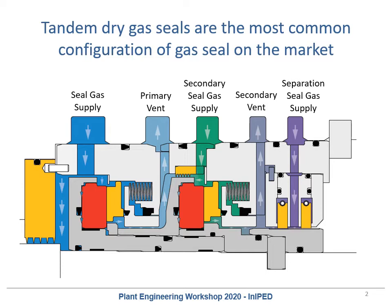Starting on the left, the most important stream is the seal gas supply. This is a cleaned gas that is injected into the seal. About 90 percent of it flows off to the left across the process labyrinth back into the process, while about 10 percent goes across the dry gas seal. This gas stream ensures that none of that dirty process gas gets into the seal, keeping it clean and dry.